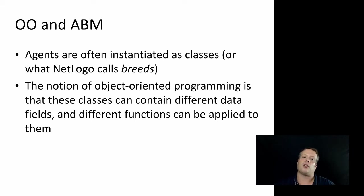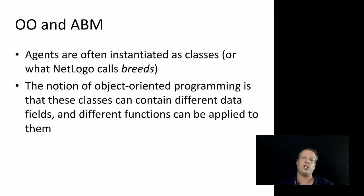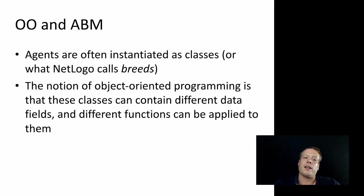Regardless, you still have a low-level form of object-oriented programming available in the current version of NetLogo through breeds. The notion of object-oriented programming is that these classes contain different data fields and different functions applicable to them — which is very similar to how we think of agents. We think of agents as a type or object that has its own properties and behaviors, very much like the way classes are conceived.